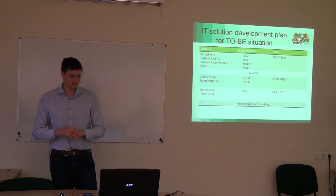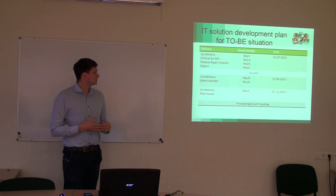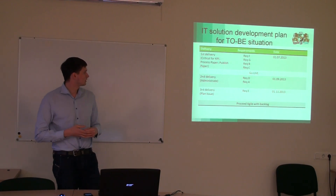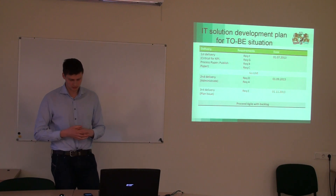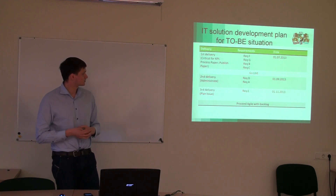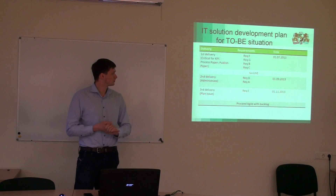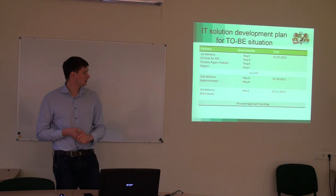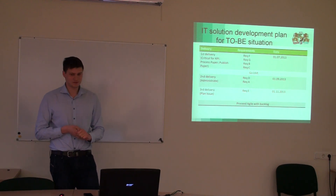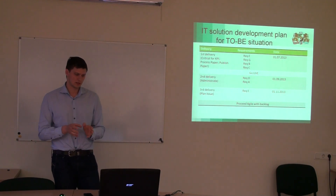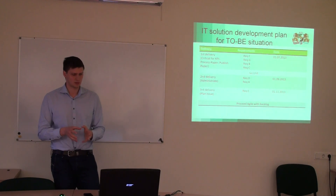For the IT development plan, I see it as three deliveries. The first one is critical for the KPIs — I have certain requirements for processing paper and publishing paper. I think that if we start right now we can be done by the first of July, and we can go live. If you want to launch this journal, we can do that — this delivery is critical for us.